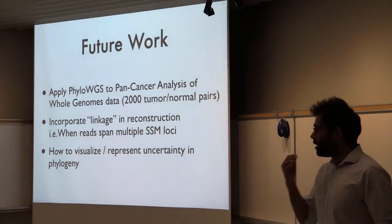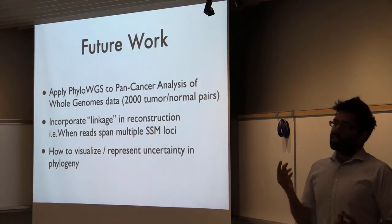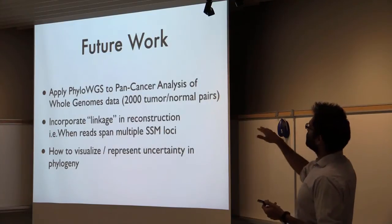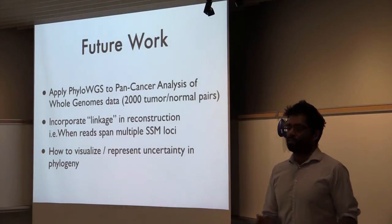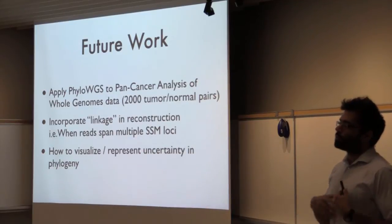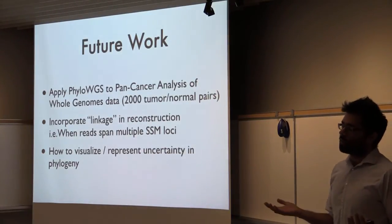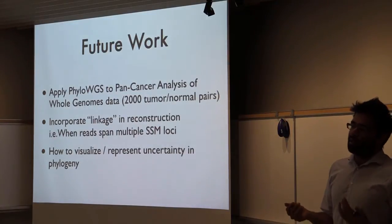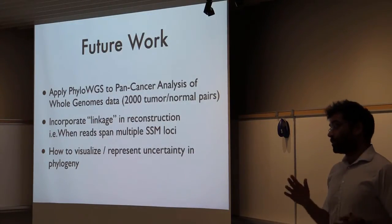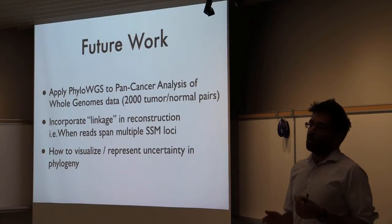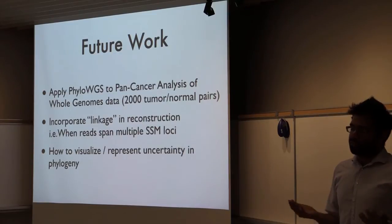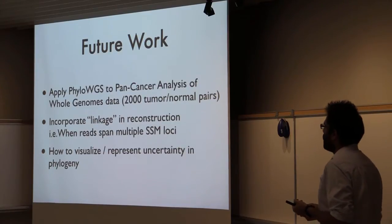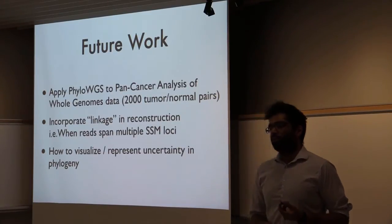What are we doing from here? We're taking this algorithm and applying it as part of the pan-cancer analysis of whole genomes project, looking at up to 2,300 whole genome sequences of tumor-normal pairs, and trying to figure out what subclonality looks like across different cancer types. We're also incorporating linkage into our reconstruction, where you have reads that span multiple SSMs — using short read technology when mutations are close together, or using long read technologies — which lets you know that two mutations are present in the same cell. We're also working on how to visualize and represent uncertain reconstructed phylogenies.